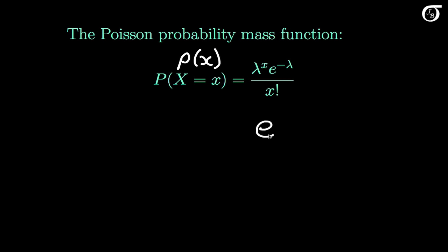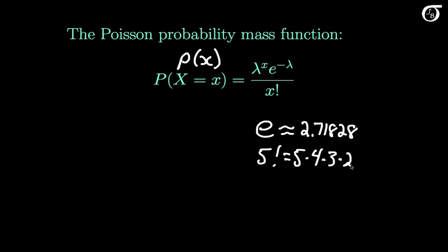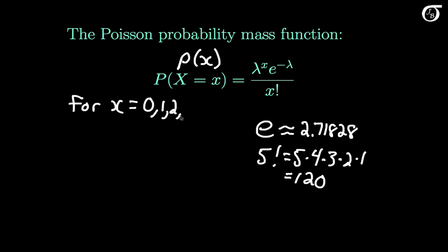E, like pi, is an important mathematical constant — the base of natural logarithms. It is approximately 2.71828, but it is an irrational number with infinite non-repeating decimal places. As a specific example of x factorial, 5 factorial would be 5 times 4 times 3 times 2 times 1, which equals 120. It's not a probability distribution until we specify what values x can take on. Here the random variable is a count of the number of events in a given unit of time, so it can take on any non-negative whole number value: 0, 1, 2, off to infinity.